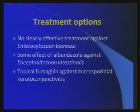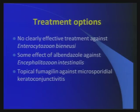Do you know the action of albendazole? It inhibits microtubule synthesis. Do microsporidia have microtubules? The polar filament — isn't it? So albendazole can target that. For keratitis, ocular microsporidiosis is treated with topical fumagillin, which is an antifungal agent. That's all.